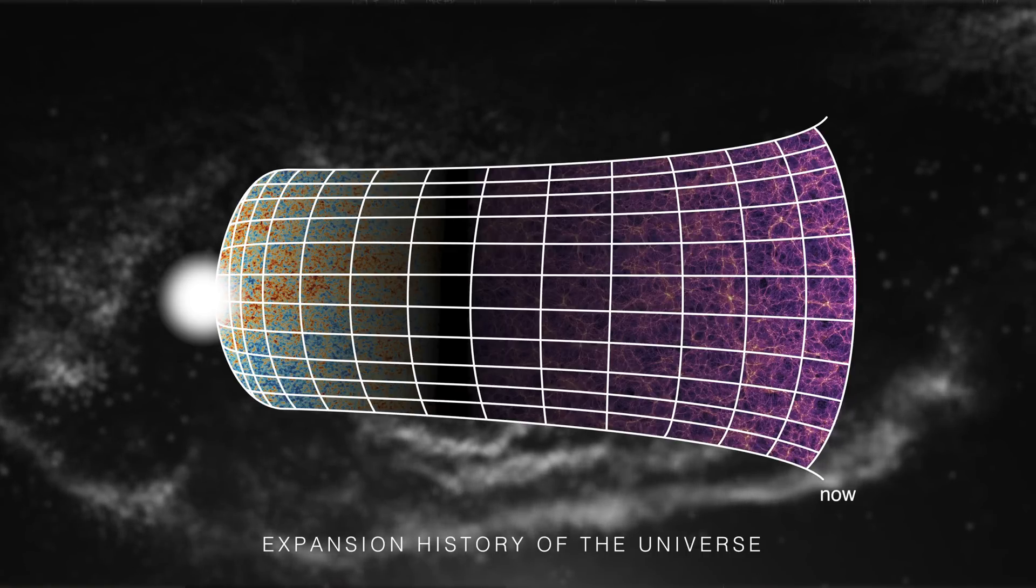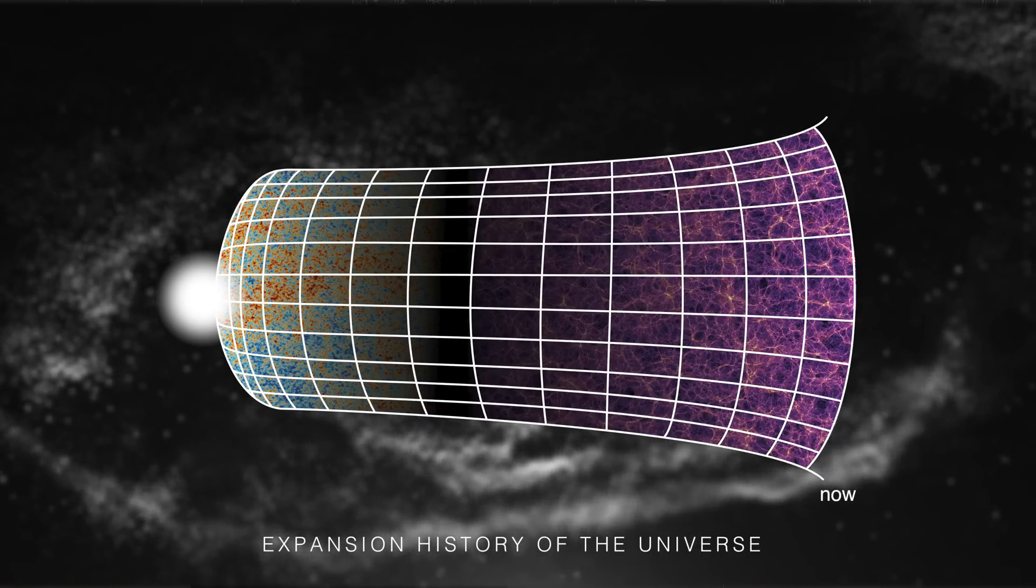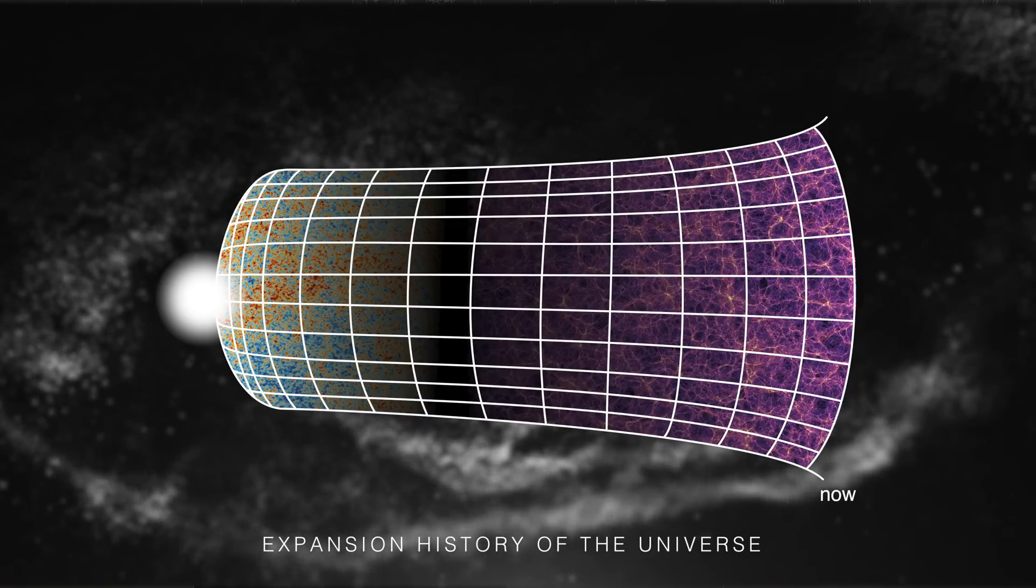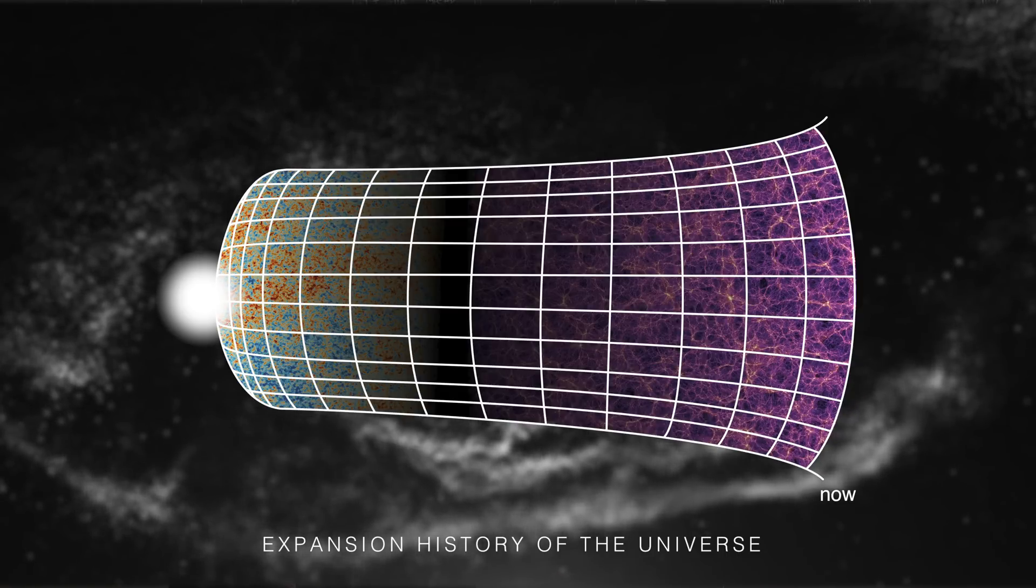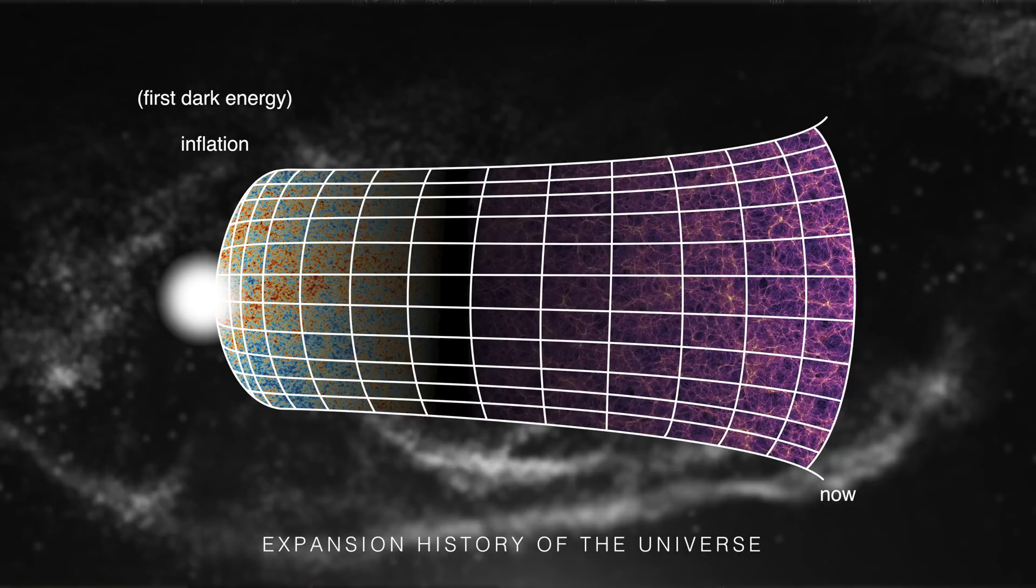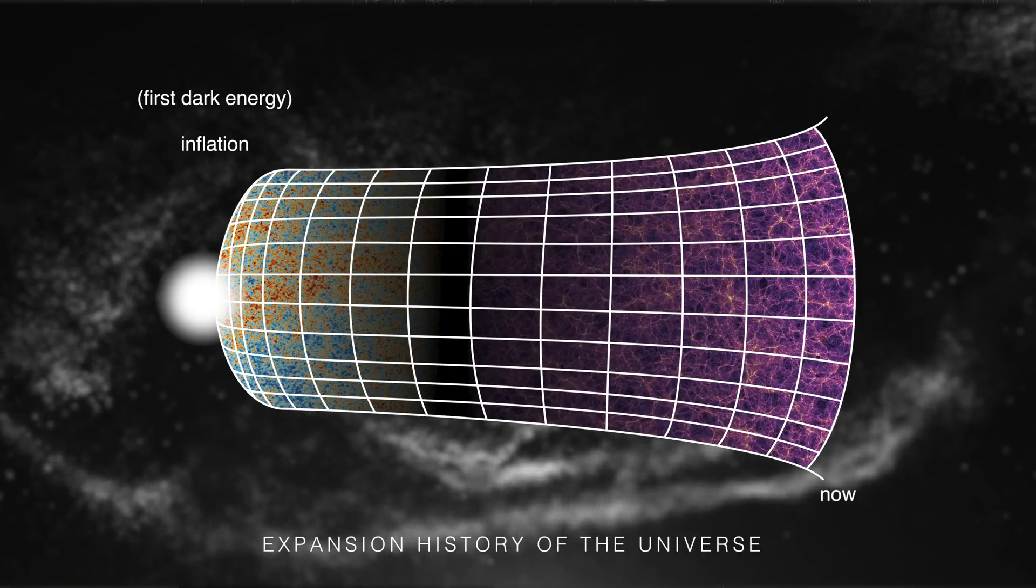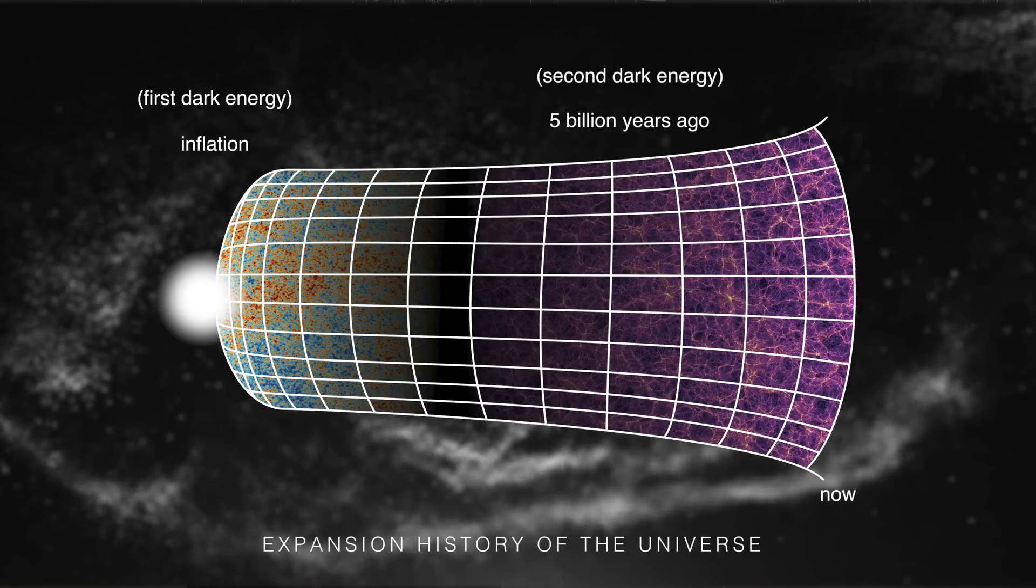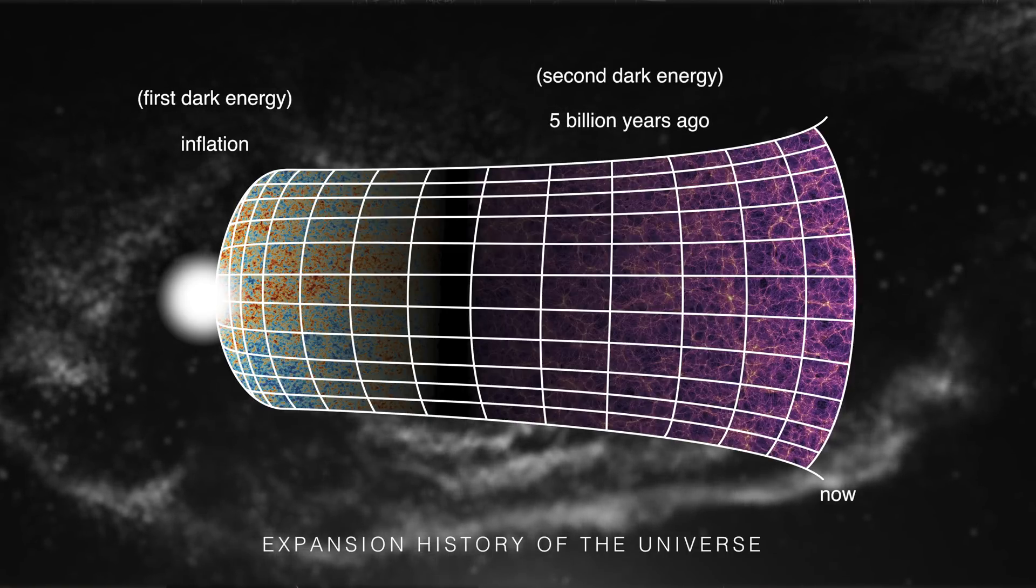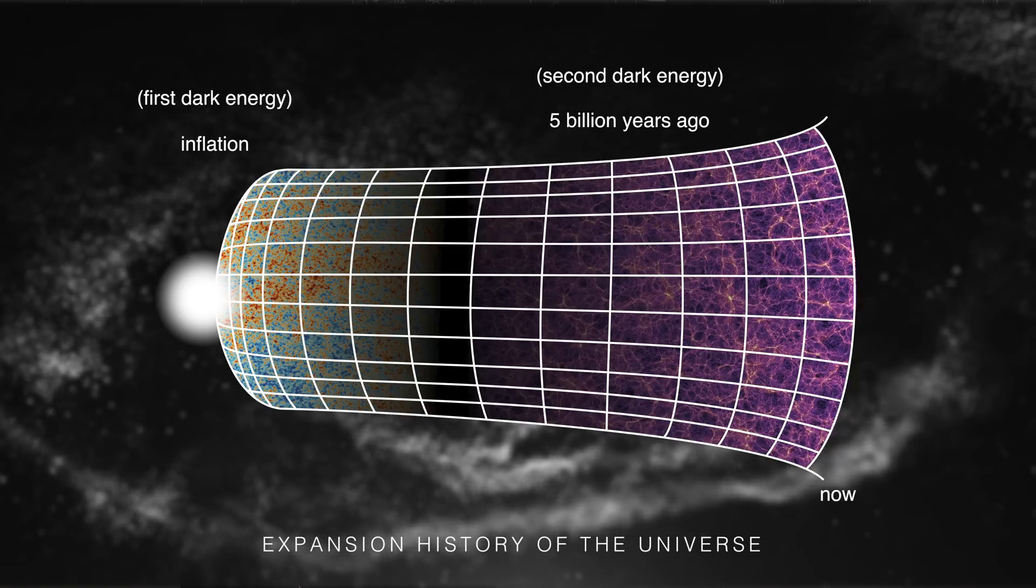Another possibility is that dark energy is more complicated than we currently think. Astronomers believe that in the very early universe, just a fraction of a second after the Big Bang, something like dark energy caused the universe to expand in what is called inflation. Then the effect of dark energy somehow turned off until the universe was about 9 billion years old and then became important again, causing the expansion of the universe to begin accelerating.